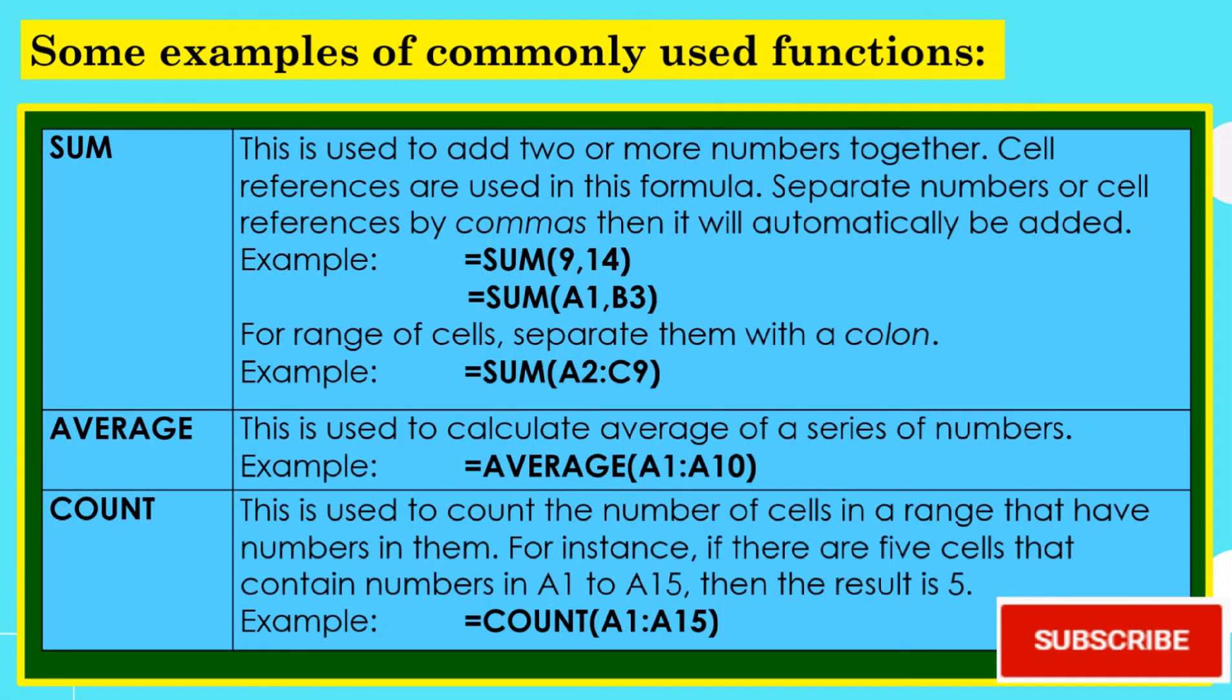Some examples of commonly used functions are sum, average, and count. Sum is used to add two or more numbers together. Cell references are used in this formula. Separate numbers or cells referenced by commas, then it will automatically be added.